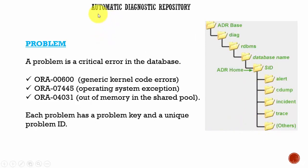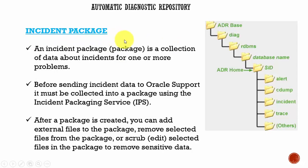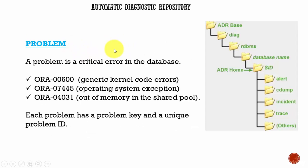Whenever you are working with the Automatic Diagnostic Repository, you will hear terms like problem, incident, and incident package. A problem is a critical error in the database — not your regular error like table does not exist, column name is wrong, or invalid table. These are severe errors where DBA intervention is needed and sometimes Oracle support is needed.